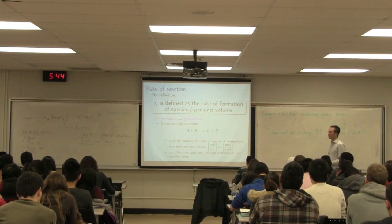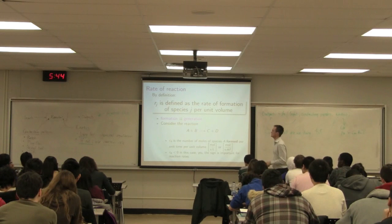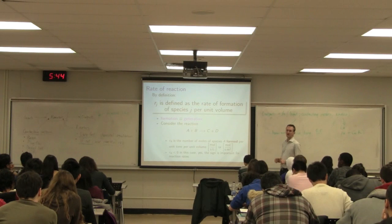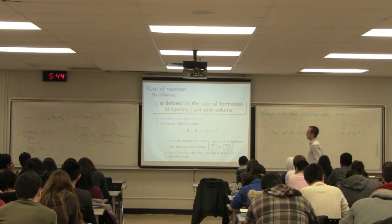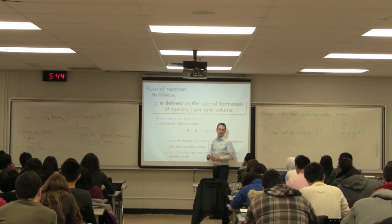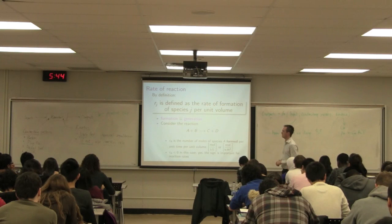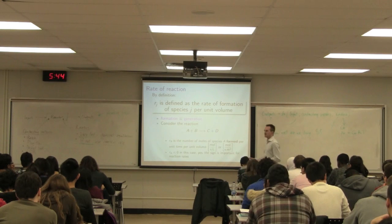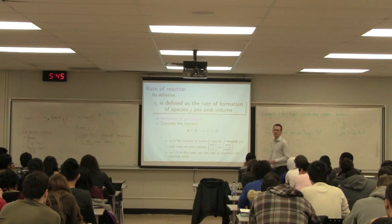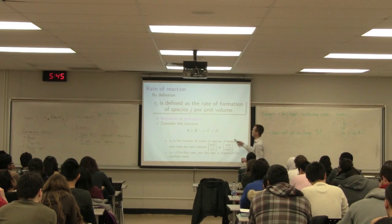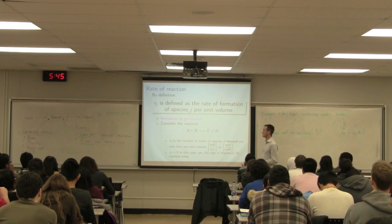Let's be more concrete: we'll define the reaction rate for species J as the rate of formation of species J per unit volume. Formation is the same as generation — rate of creation of the species. For the reaction A + B → C + D, R_A is the rate at which we're forming A: moles of species A being formed per unit time per unit volume. Units are moles per second per liter or moles per second per meter cubed.